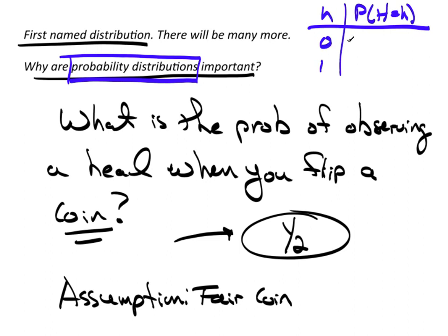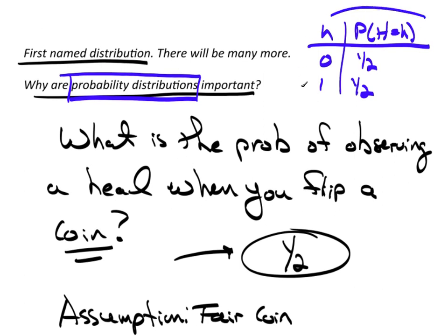Probability of no heads is a half, probability of one head is a half. You actually know this, it's in your head. You don't think of it that way but you know it. The only way you could answer that question was if you knew this distribution, whether you had a conscious knowledge of it or not. You cannot answer probability distribution questions without a probability distribution.